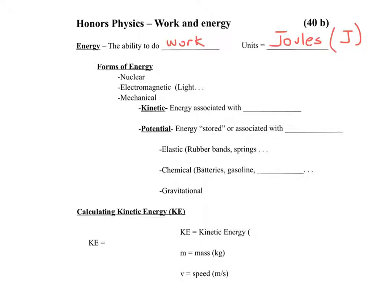And energy, you probably discussed this quite a bit in eighth grade, there's different forms of energy. Nuclear energy, electromagnetic energy, which comes in different types. Light is a form of electromagnetic energy, x-rays, gamma rays, ultraviolet, infrared, and a few others. We're going to save those for second semester.